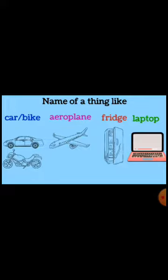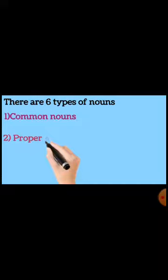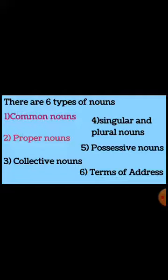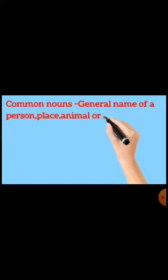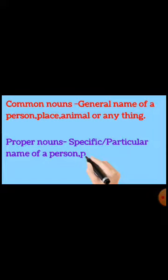There are six types of nouns: Common Nouns, Proper Nouns, Collective Nouns, Singular and Plural Nouns, Possessive Nouns, and Terms of Address. In this video, we will be learning Common Nouns and Proper Nouns. Common Nouns are the general name of a person, place, animal, or anything. Proper Nouns are the specific or particular name of a person, place, animal, or anything.